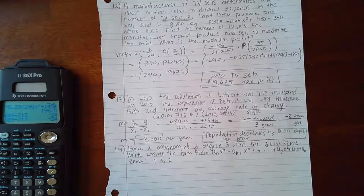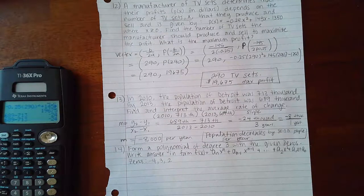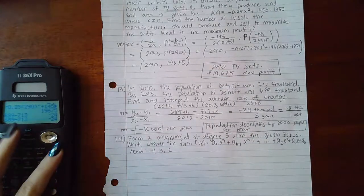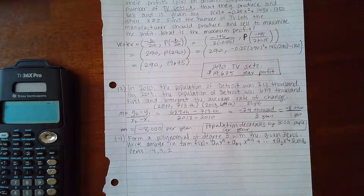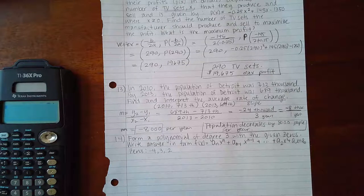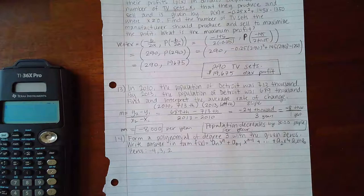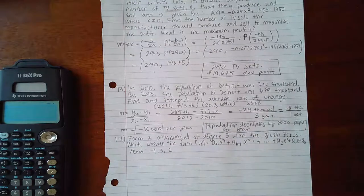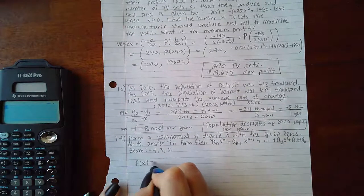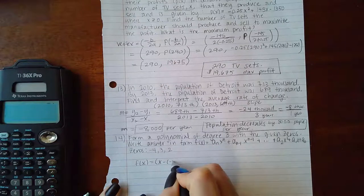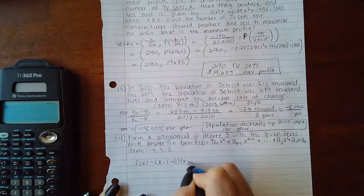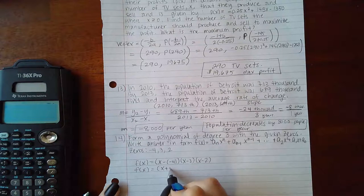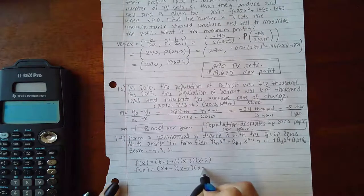Number 14 says: Form a polynomial of degree 3 with the given zeros. Answer in general polynomial form. In order for it to have degree 3, I need three zeros, and they did give me all three zeros. The function in factored form is (x minus negative 4)(x minus 3)(x minus 2). I can clean up those double signs: (x+4)(x-3)(x-2).